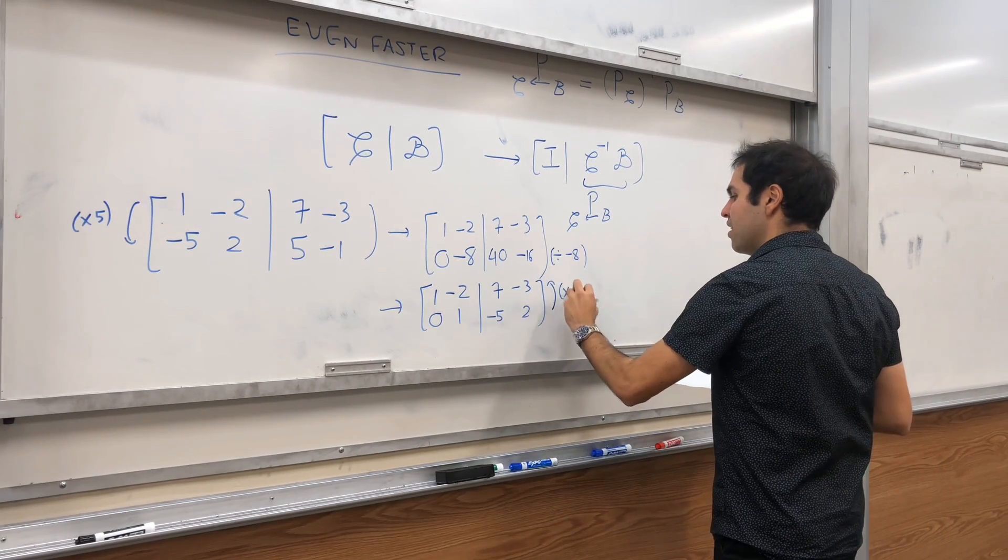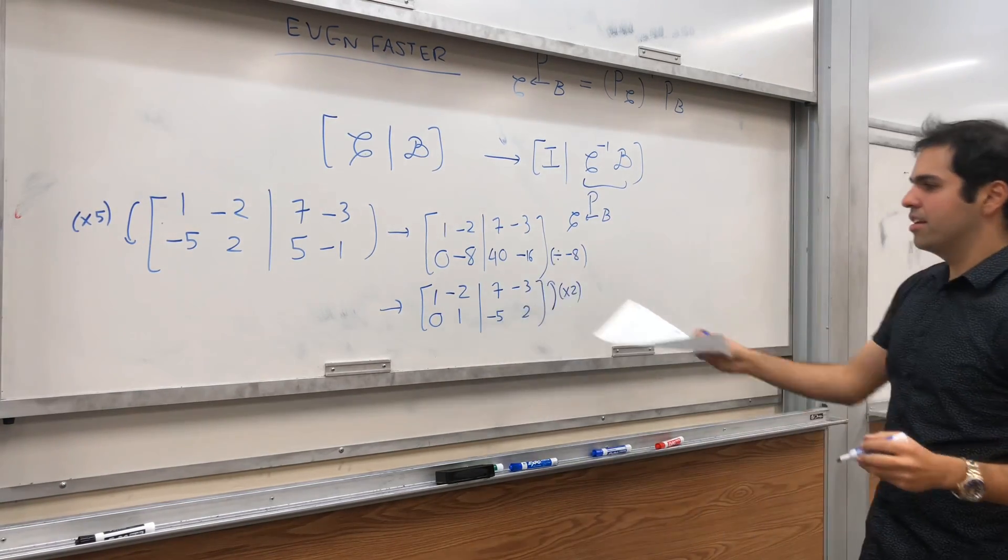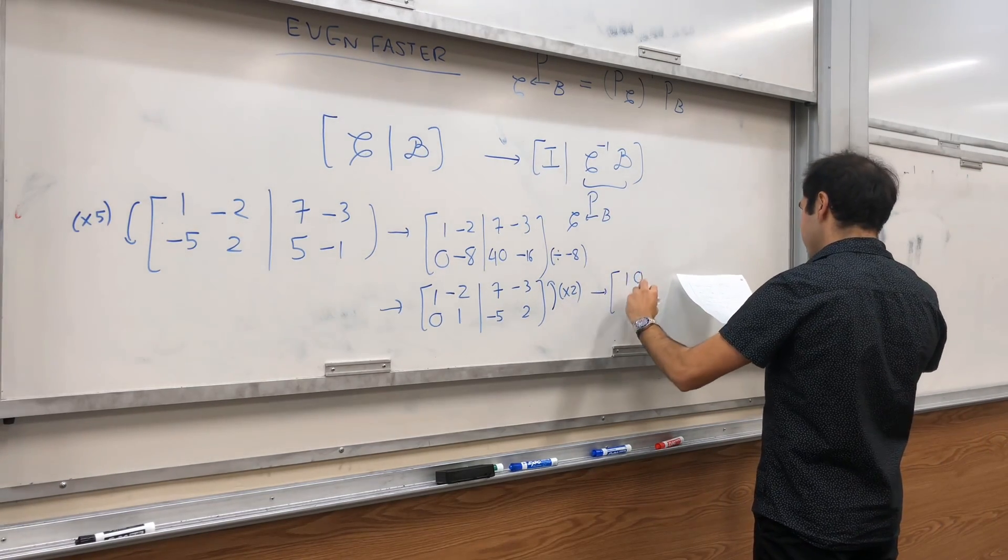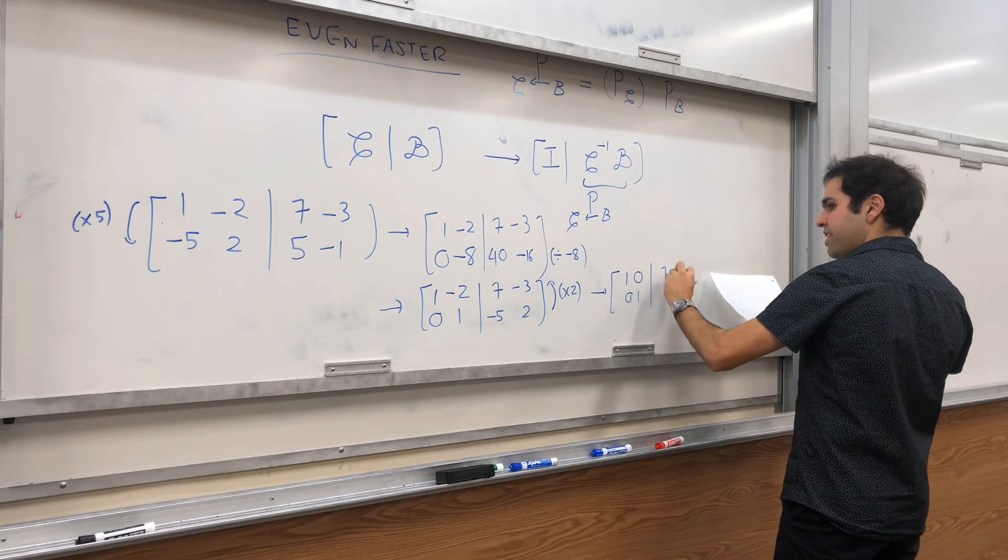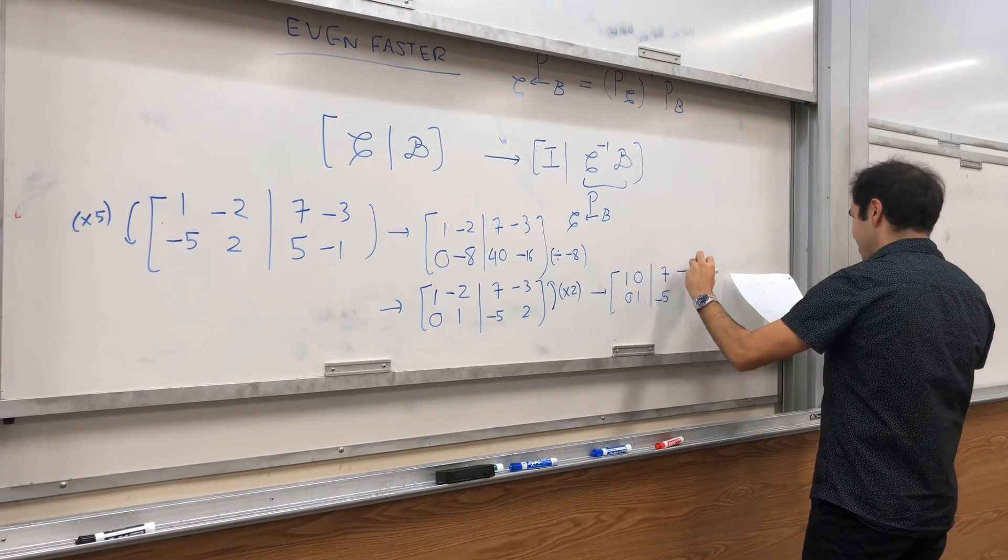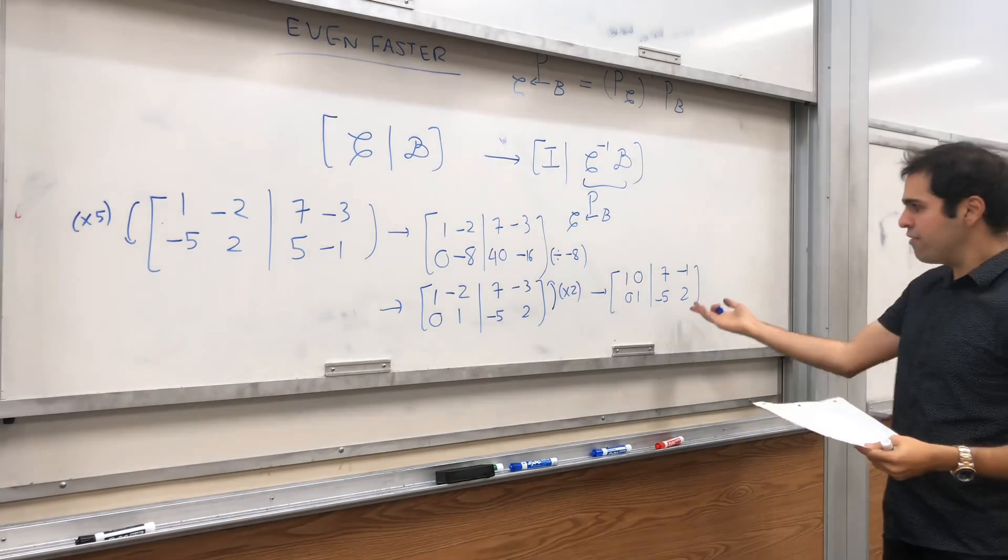you just multiply the second row by 2. And, add it to the first row. And, you indeed get 1, 0, 0, 1. And, then, 7 minus 5. And, then, I think, just minus 1 and 2. And, therefore,